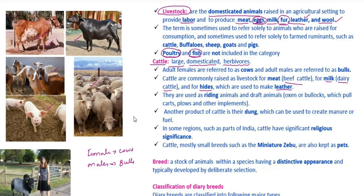If you use riding animals, especially draft animals, you can use oxen and bullocks. Bulls means adult males, bullocks means young males. We use bulls and bullocks.